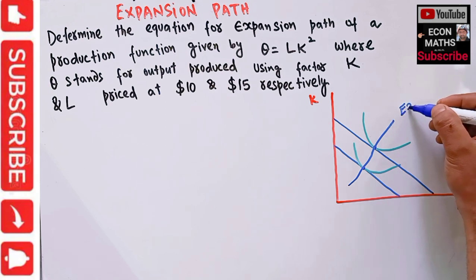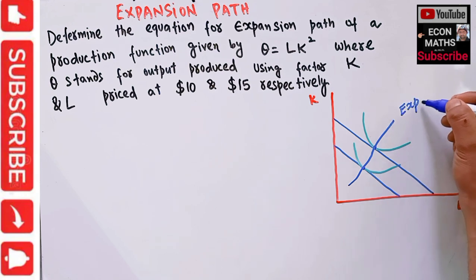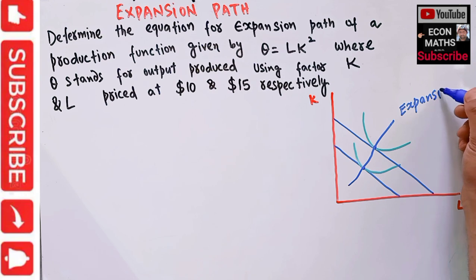When we join these equilibrium points, the resulting curve shows us the expansion path.